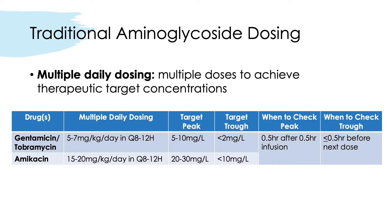There are two types of aminoglycoside dosing. The first is traditional aminoglycoside dosing, also known as multiple daily dosing, where multiple doses are needed to achieve target peak and trough concentrations. This chart shows the different dosing regimens, target peaks, and troughs to achieve.